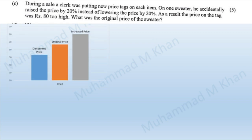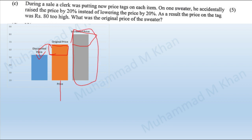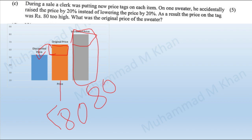Moving forward to part C of the question. Before I start solving, let me explain the concept. It is clear from the question that there was an original price. The sales clerk was supposed to decrease the original price by 20% to get a discounted price, but instead he inadvertently increased the original price by 20%. The increased price is now 80, meaning the original price is less than 80, and the discounted price would be even less than the original.